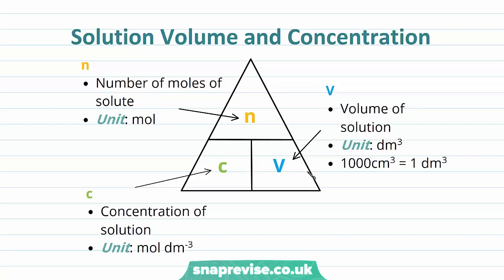N, our number of moles, is measured in the unit of mole. C, the concentration of our solution, is measured in the unit moles per decimetre cubed. And V, the volume of our solution, is measured in decimetres cubed, where 1000 centimetres cubed is equal to 1 decimetre cubed.